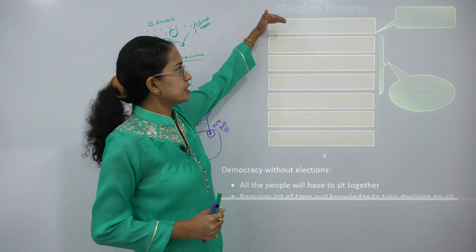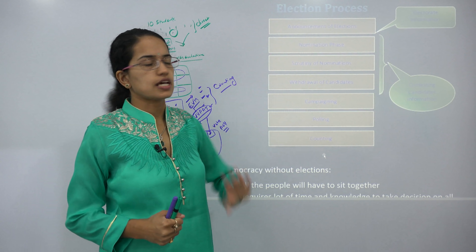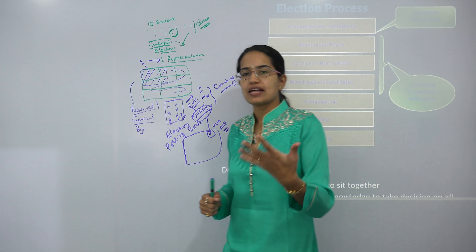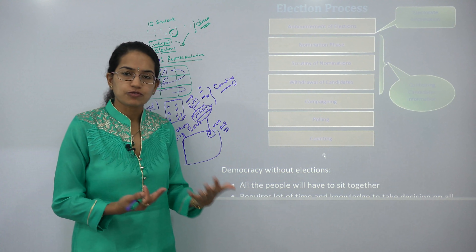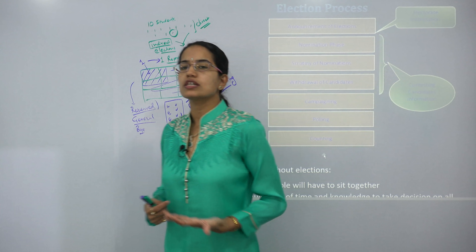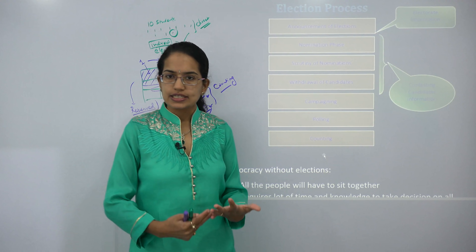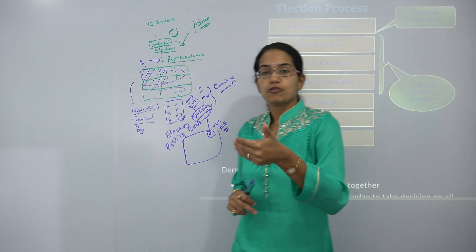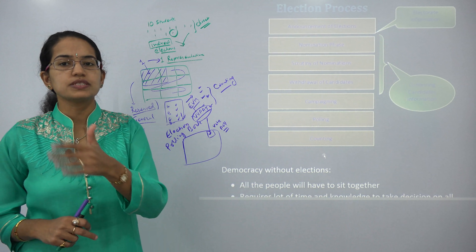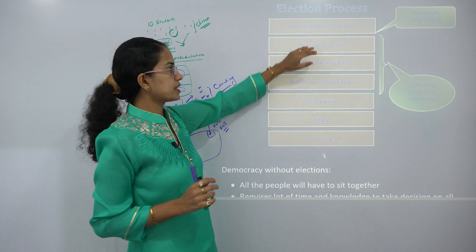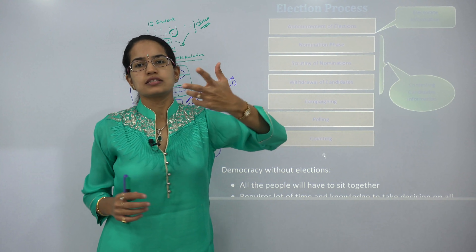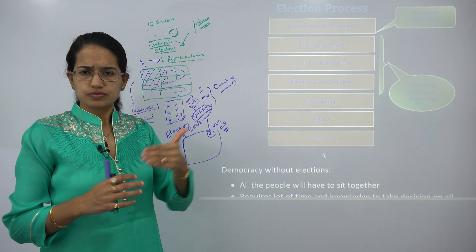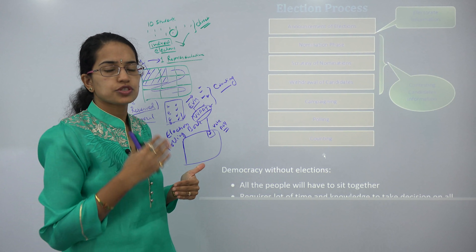In summary, the election process begins with the announcement of election dates, followed by nomination of candidates. If I want to nominate myself as a candidate for Lok Sabha, I must provide details of my assets, liabilities, criminal background, and educational qualification — though educational qualification is not mandatory in India, since requiring only graduates would exclude 90% of eligible citizens. Nominations are then scrutinized, some candidates are withdrawn as unsound or having criminal backgrounds, and the Election Commission decides who will contest.